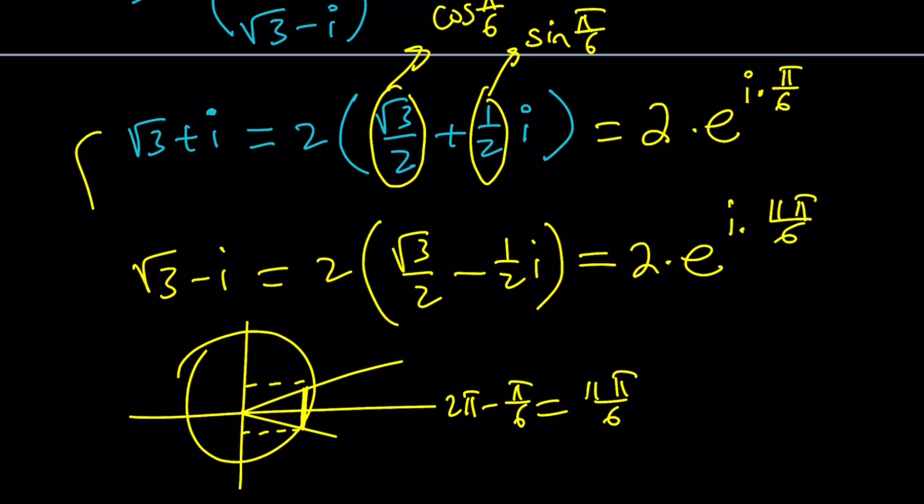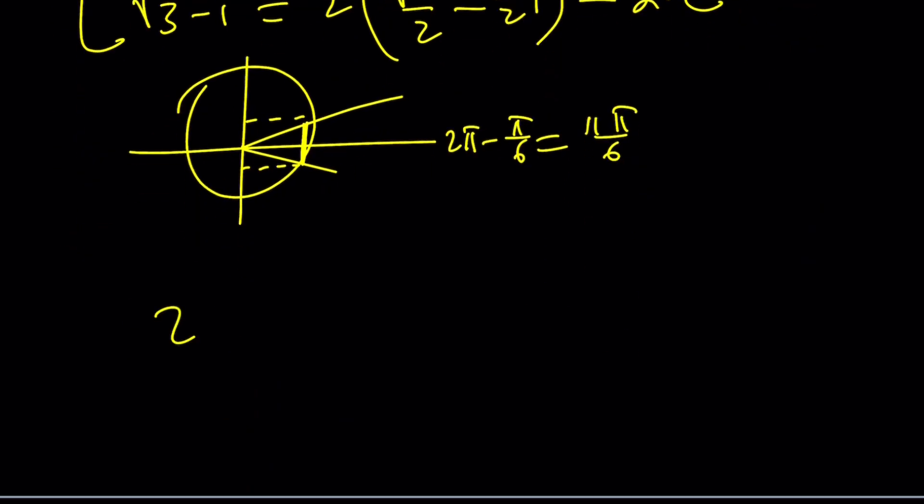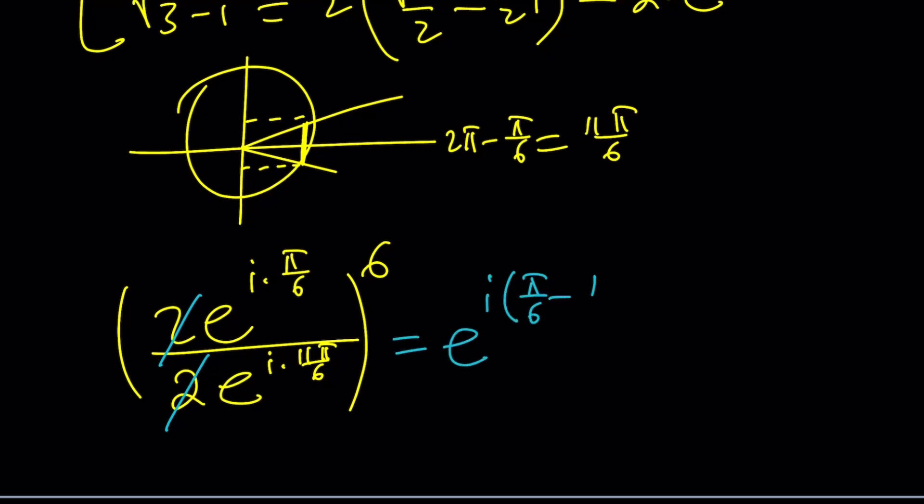Now, we're going to go ahead and divide these numbers. 2 times e to the power i pi over 6. Divide by 2 times e to the power i 11 pi over 6. And then this quotient will be raised to the 6th power. Make sense? Okay. 2 cancels out. I'm supposed to subtract the exponents e to the power i times pi over 6 minus 11 pi over 6. And then, of course, that thing must be raised to the 6th power.